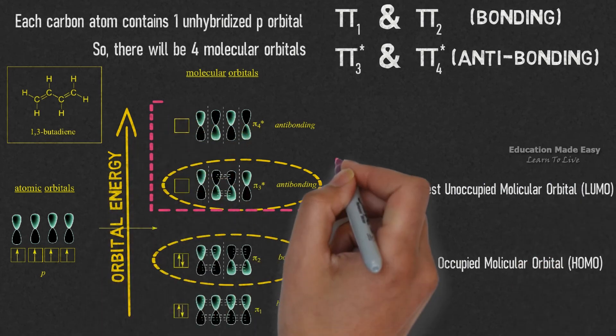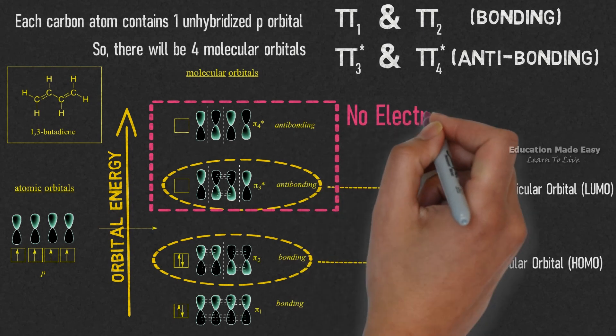Remember that pi3 star and pi4 star are antibonding and don't have any electrons in them.